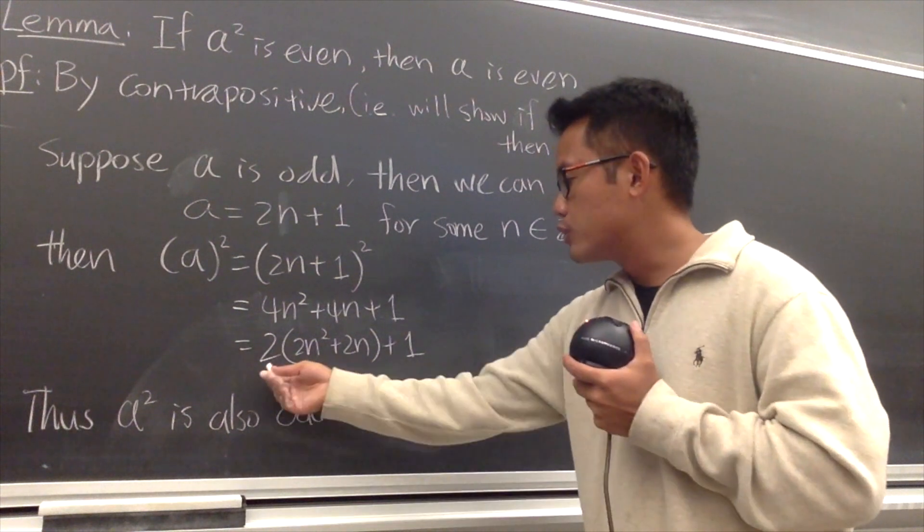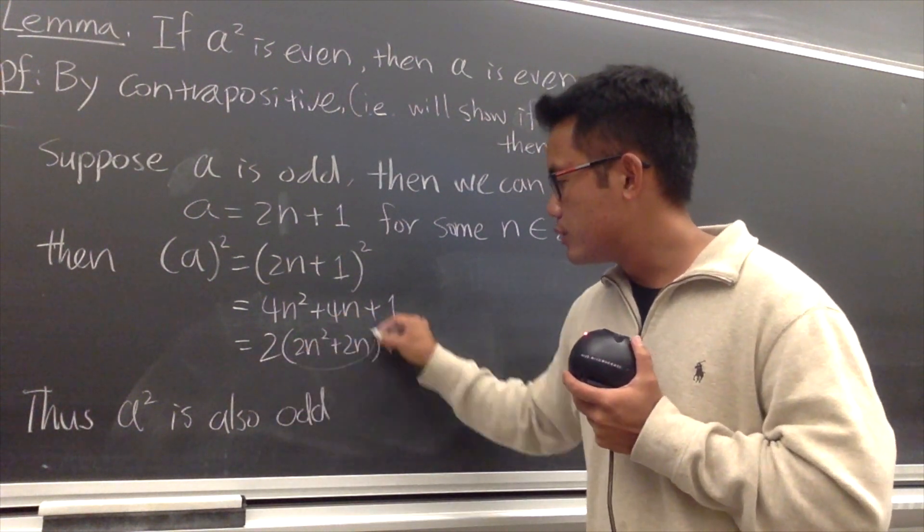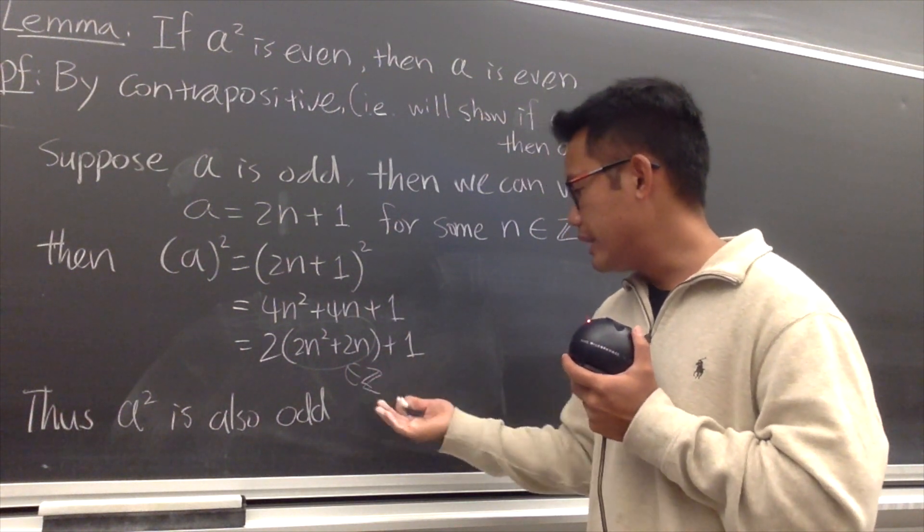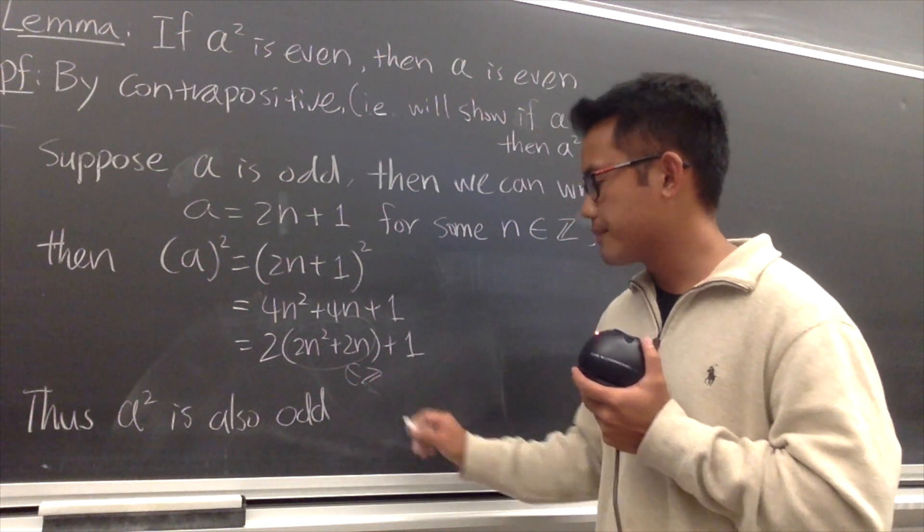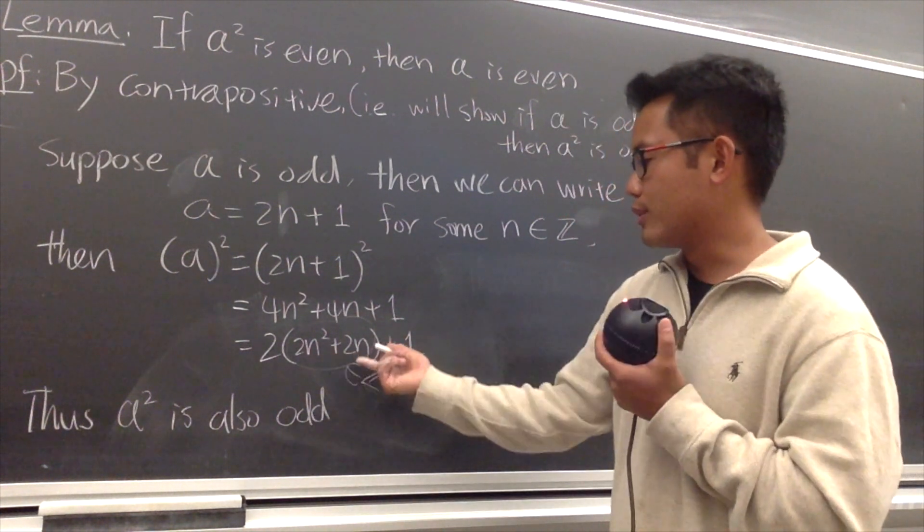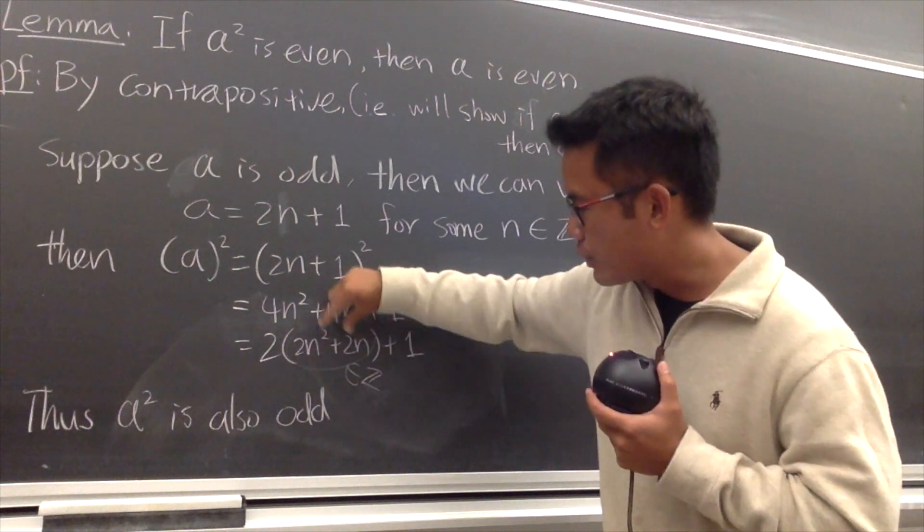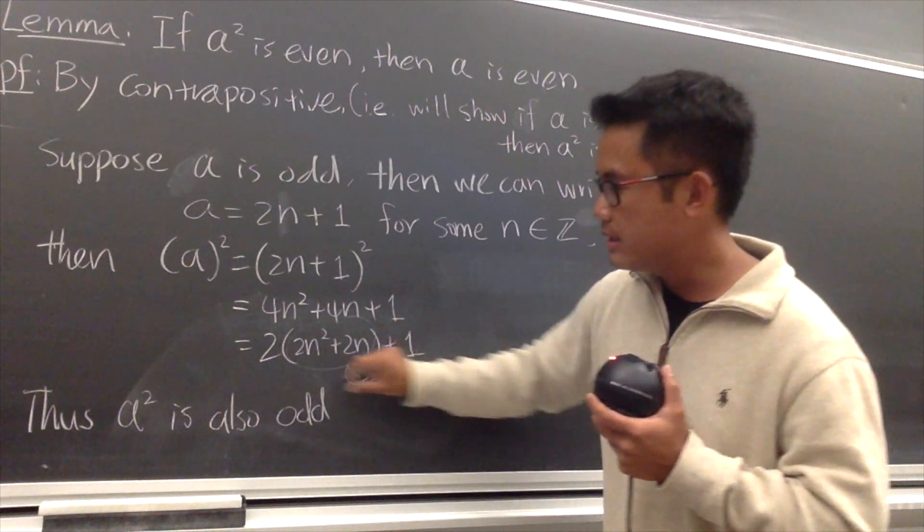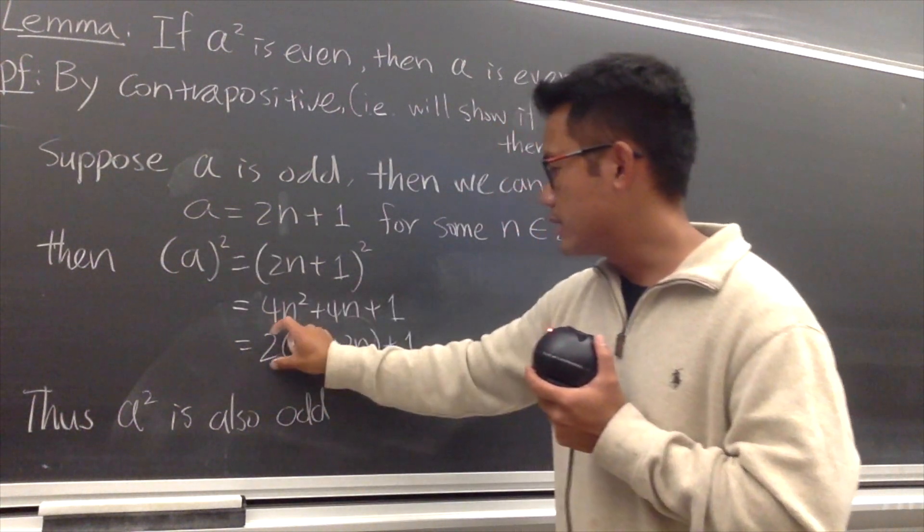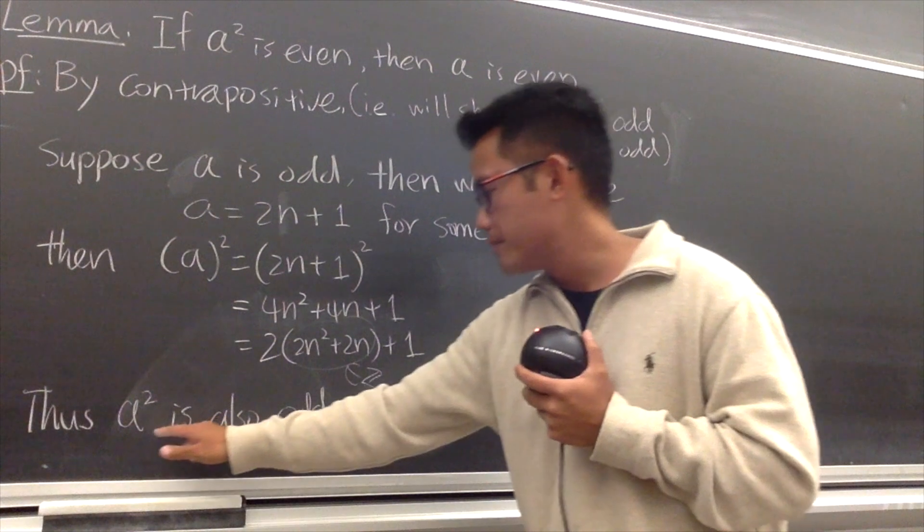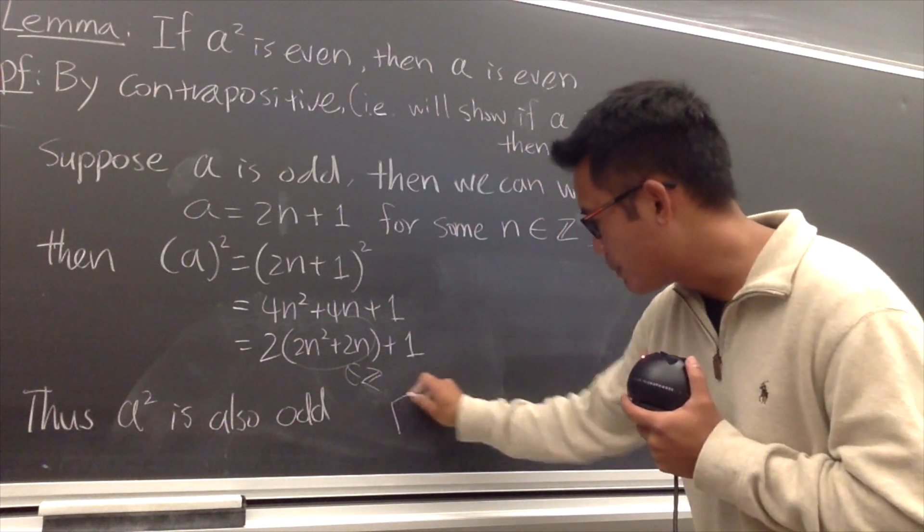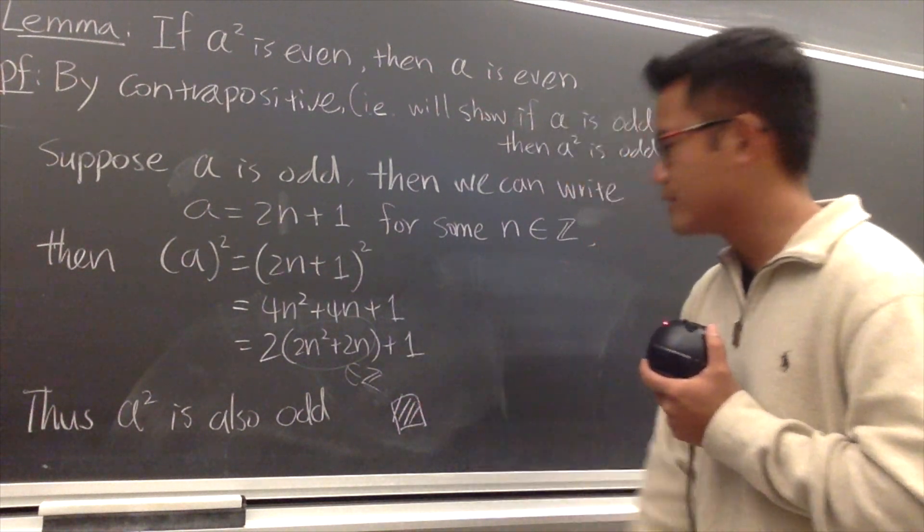And as you can see, once we have this, this right here is clearly an integer as well. This belongs to Z, because all this is just integers. 2 times an integer plus 1, this is the definition of an odd number. And as you can see, a squared has that form. That means a squared has to be also odd. And we are done with the lemma, so you put a little box, shade it in, just like that.